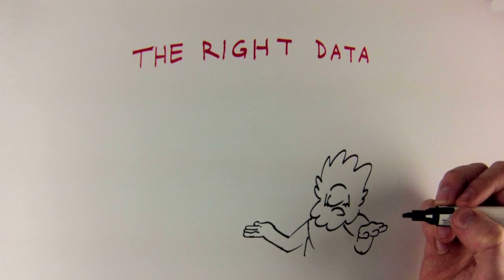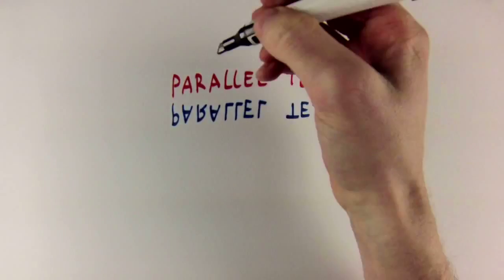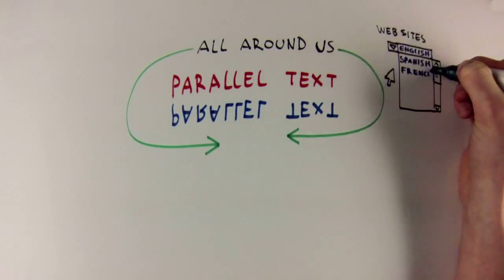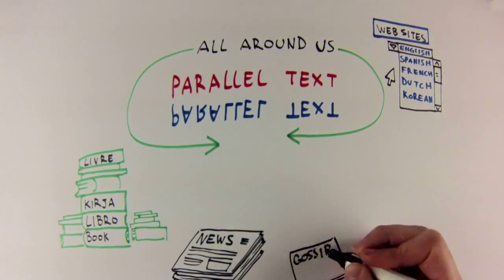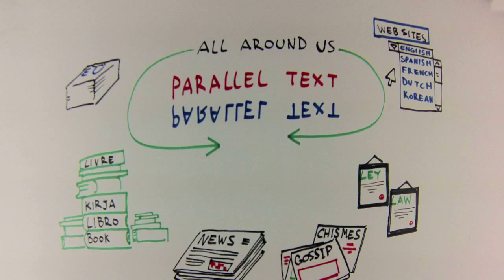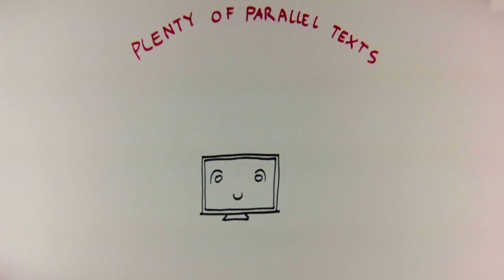You might well wonder, where do you get this data, these parallel texts? And that's a very important question, because the better the data, the better the computer will perform. Thankfully, because so much work has been done translating between languages, these parallel texts exist all around us already. For example, many websites provide the same content in different languages. Books, newspapers, and magazines are also translated into multiple languages. So there are plenty of parallel texts from which the computer can learn.